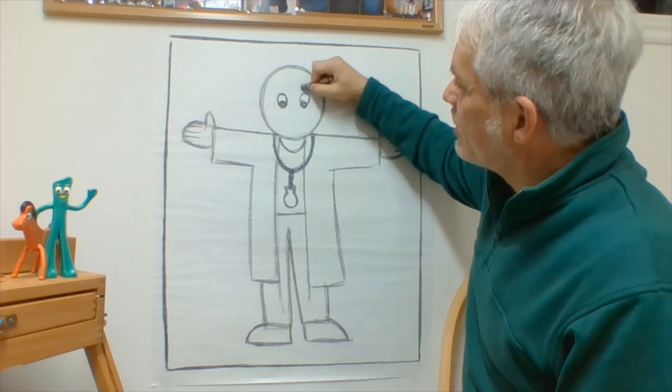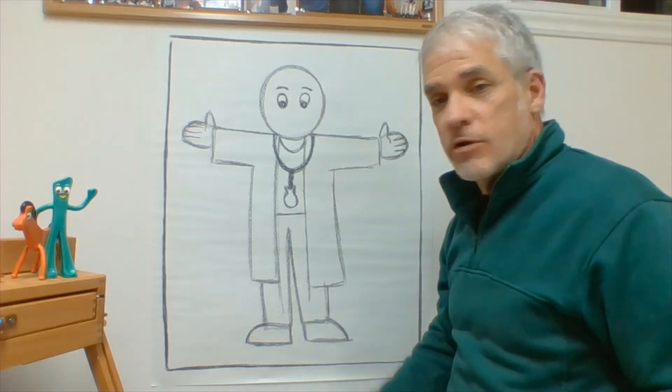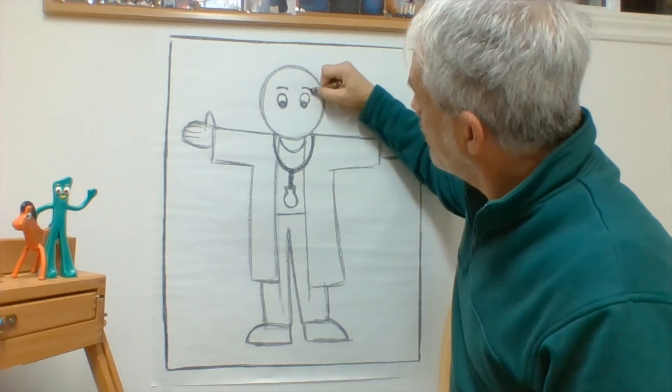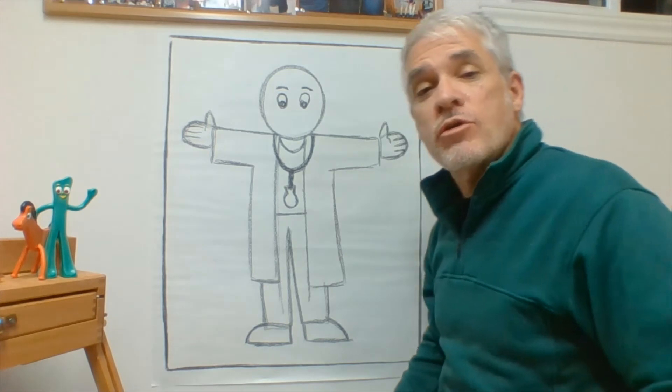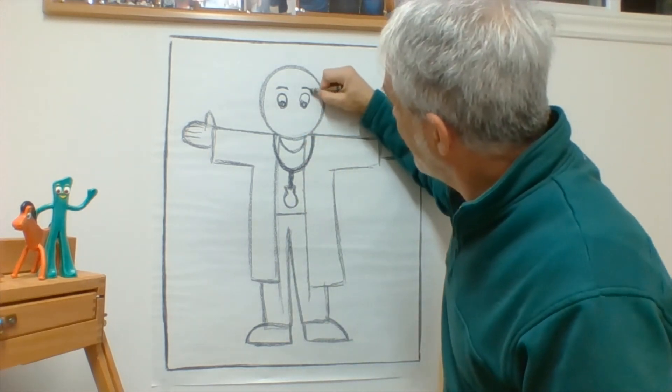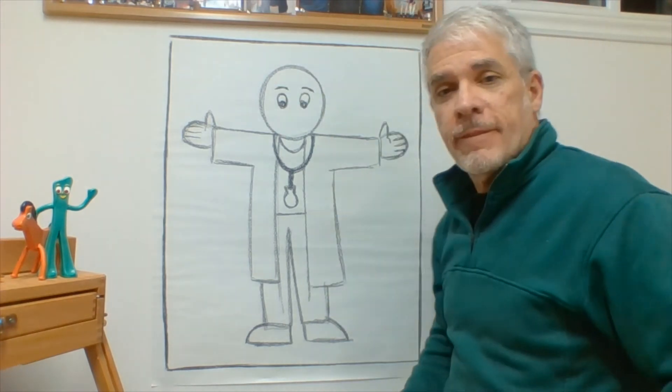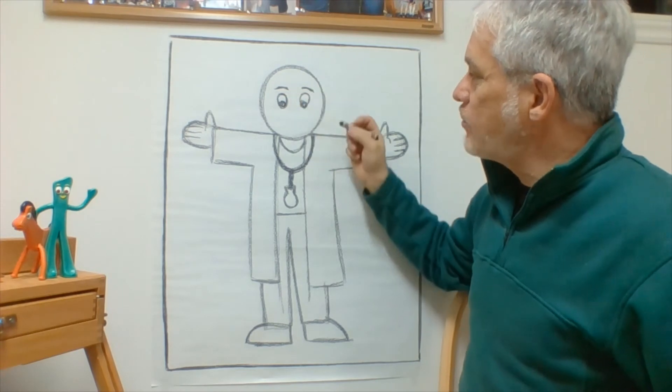And above that, there's a curve and another curve. And if I'm going too fast, you can always slow down the video or watch it again. But I've already got eyes and eyebrows.